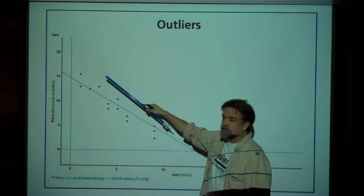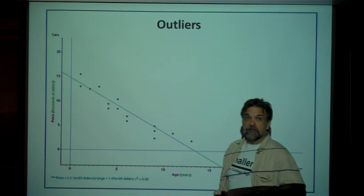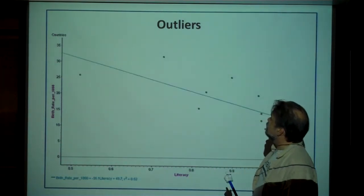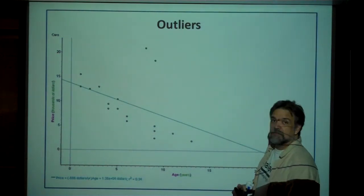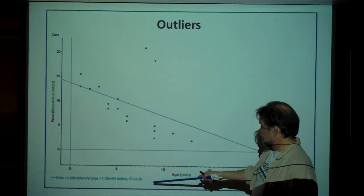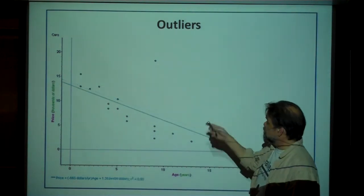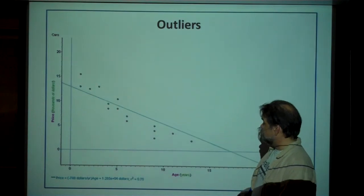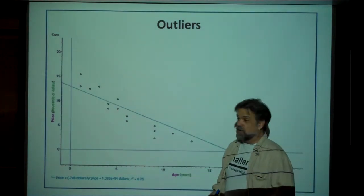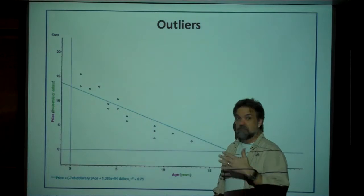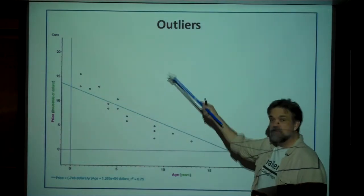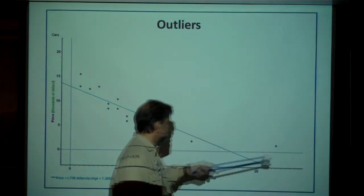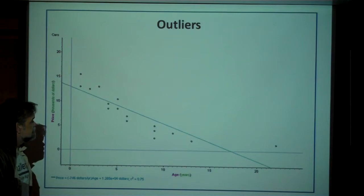The other points may have had influence on the y-intercept, and they definitely had an influence on r-squared when we removed them. Right now r-squared is 34%. When I remove the Mercedes, r-squared goes up to 50%. Remove the BMW, it goes up to 75%. So I've gone from moderately weak to strong correlation just by removing those two points that really weren't appropriate anyway.